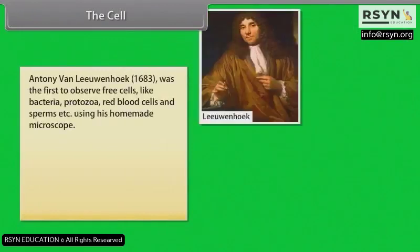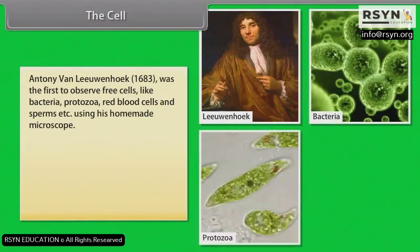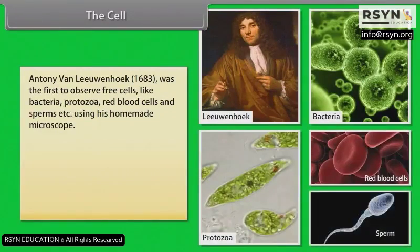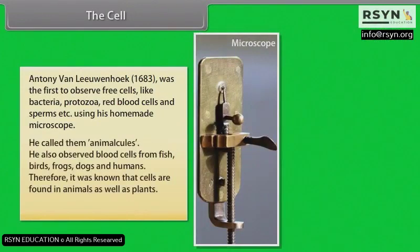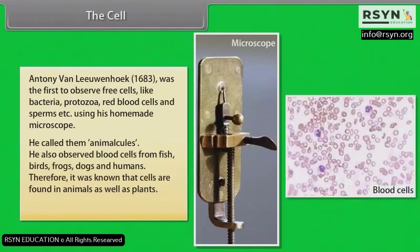Antony van Leeuwenhoek was the first to observe free cells like bacteria, protozoa, red blood cells and sperms, using his homemade microscope. He called them animalcules. He also observed blood cells from fish, birds, frogs, dogs and humans. Therefore, it was established that cells are found in animals as well as plants.